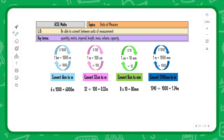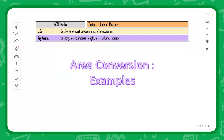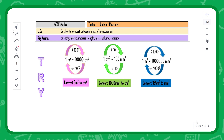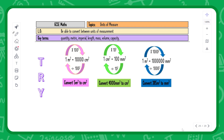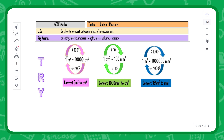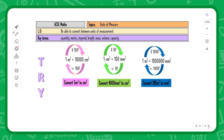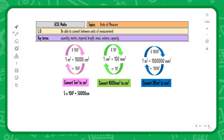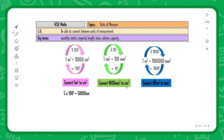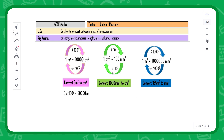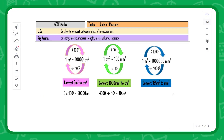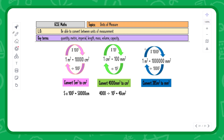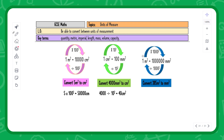Now let's apply this to units of area. Pause the video and give it a go first. Meters squared to centimeters squared: going forward, times by 100 squared, or times by 100 twice. Millimeters squared to centimeters squared: going backwards, divide by 10 squared, or divide by 10 twice. Meters squared to millimeters squared: times by 1000 squared, or times by 1000 twice.